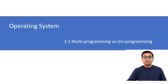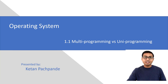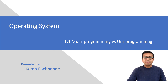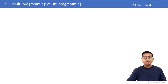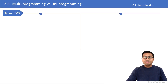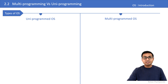Welcome back to the course on operating systems. In the previous session I started with the introduction chapter. In this session I am going to cover uniprogramming versus multiprogramming. Operating systems are of two types: uniprogrammed operating system versus multiprogrammed operating system.